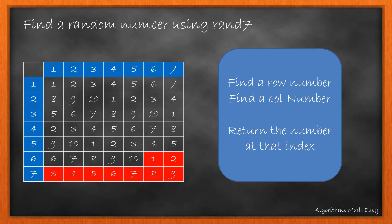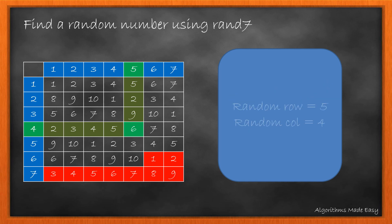And then return the number at that position in matrix. Now if the function goes beyond 40 we recalculate it as it falls in the red part. Suppose we get row as 5 and column as 4.